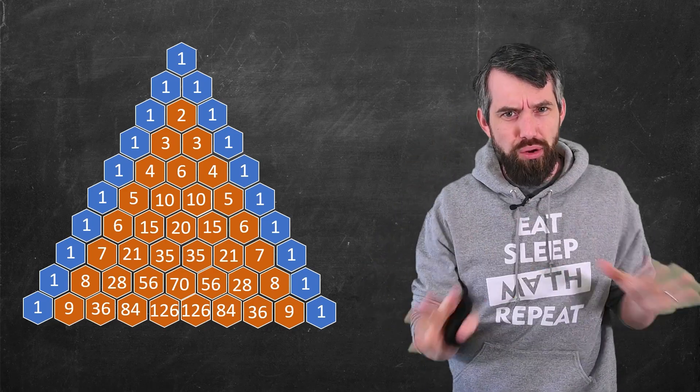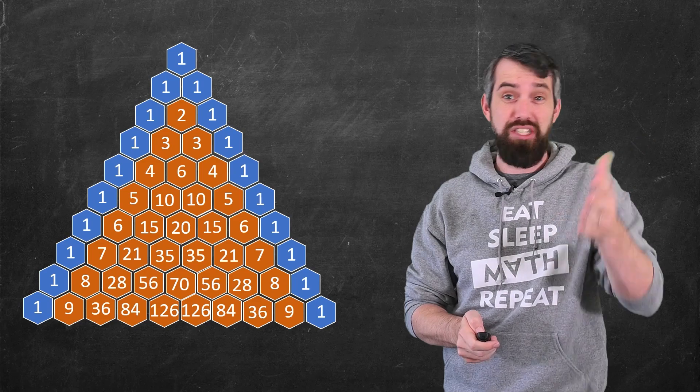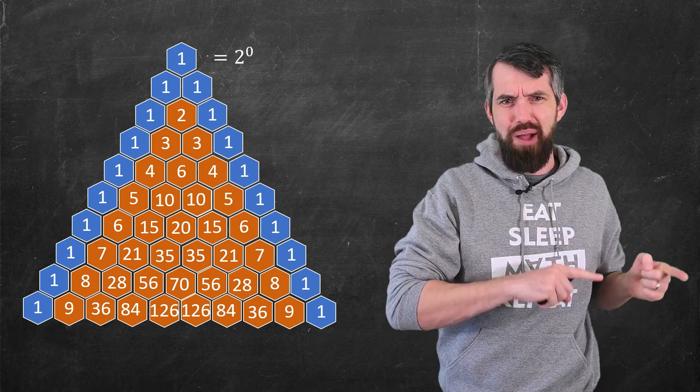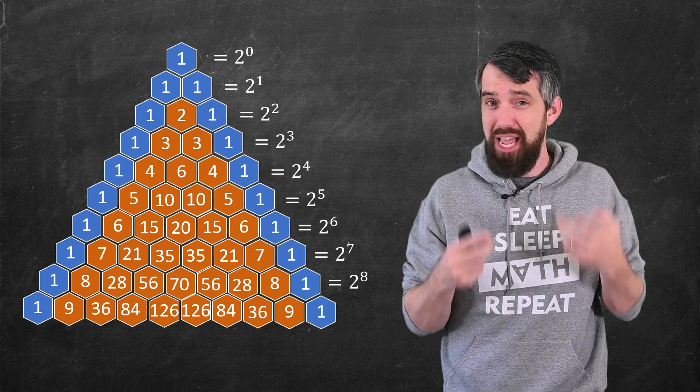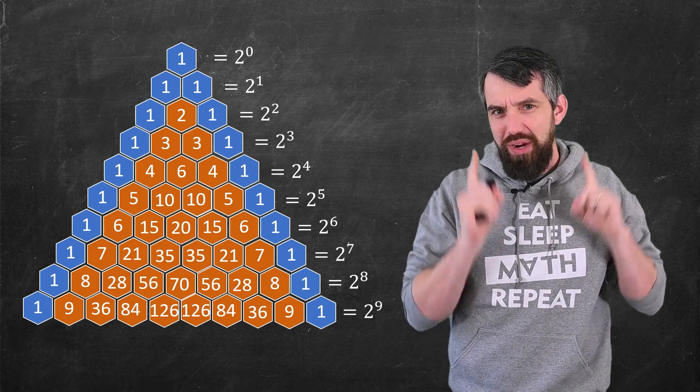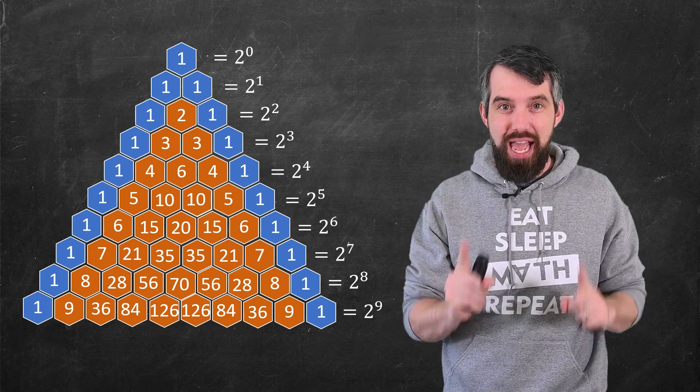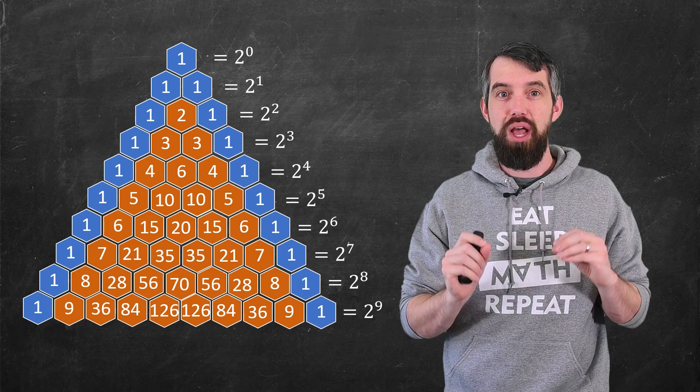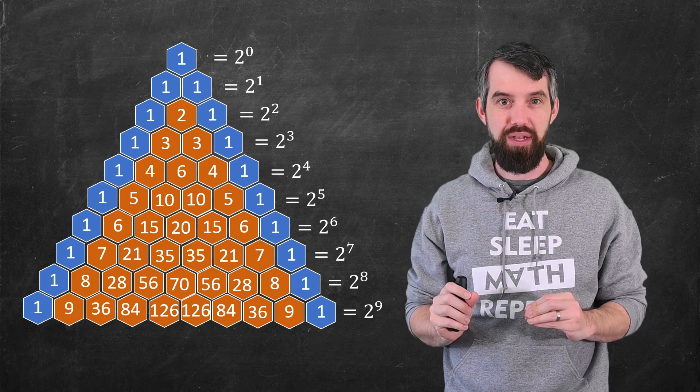Pascal's triangle has all sorts of really cool properties, like just one of them for example is that the sum of the values on every row is just a power of 2. But the reason I'm showing you Pascal's triangle is because of its connection to the topic of this video, which is powers of binomials.